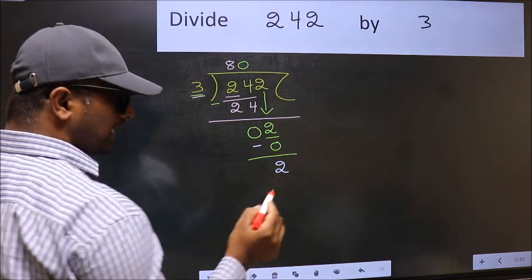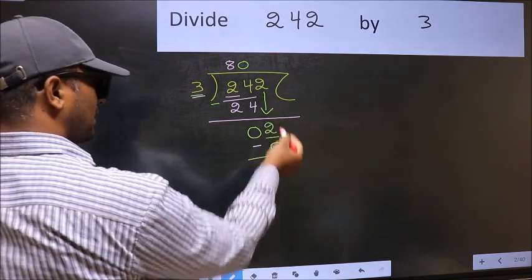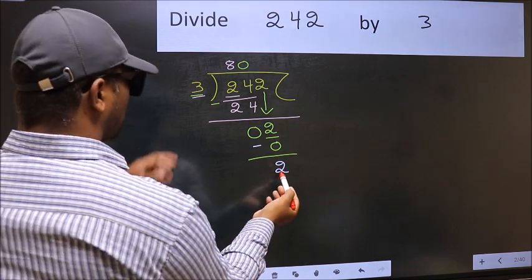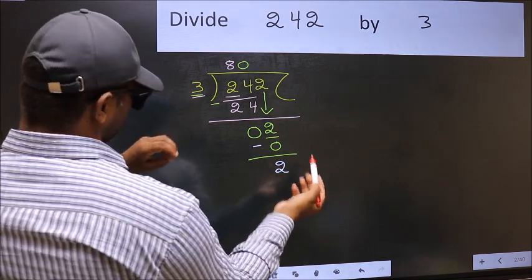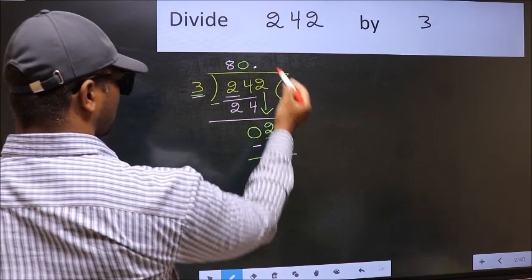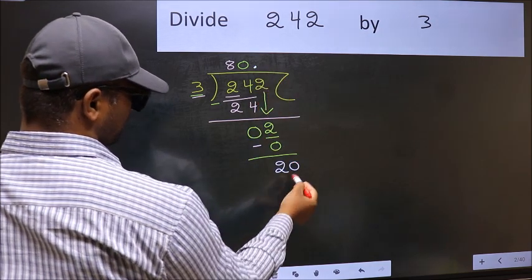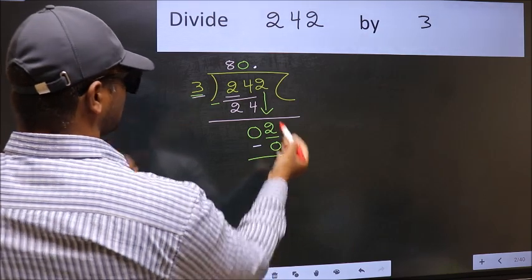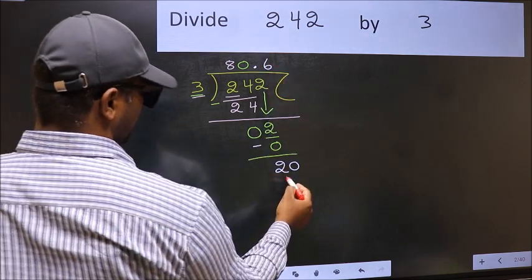Over here, we did not bring any number down. And 2 is smaller than 3. So now you can put a dot and take 0. So 20. A number close to 20 in 3 table is, 3 times 6, 18.